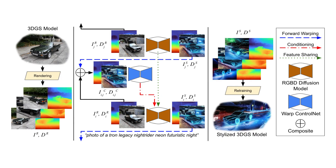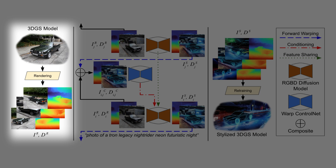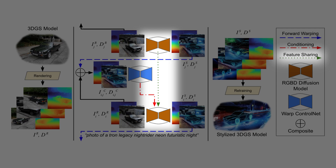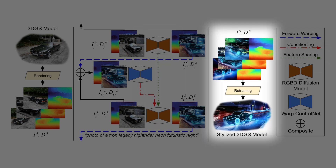Our method stylizes renders from a 3D Gaussian splat one at a time auto-aggressively. We train a task-specific ControlNet to guide stylization of every new frame, conditioned on warped composites of previously stylized frames. We additionally use depth-informed feature sharing to propagate deep network features. We use our method's outputs to train a new 3D Gaussian splatting model.